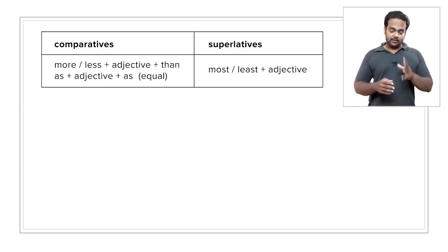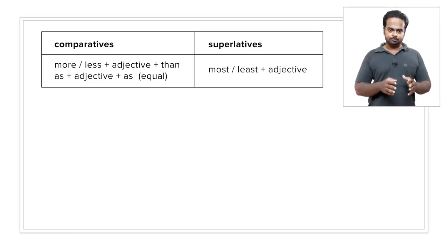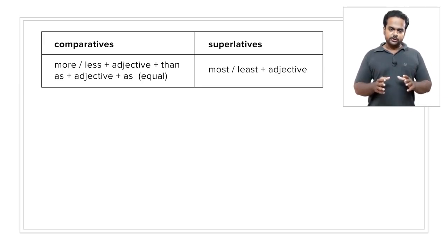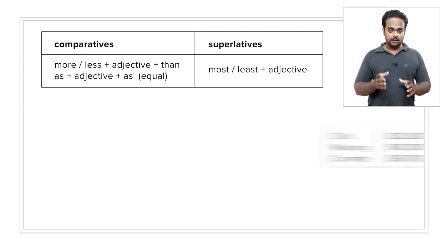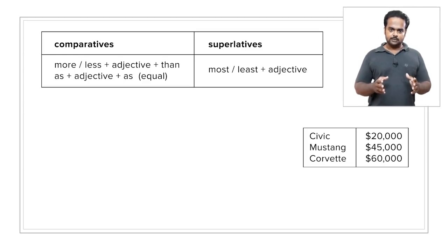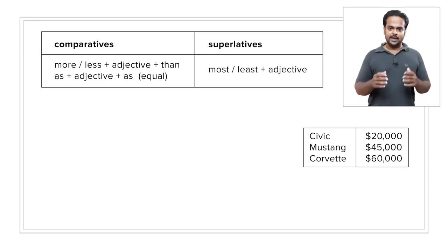Comparatives are found in this form: more or less plus an adjective plus than, or as plus adjective plus as — meaning that the two nouns we are comparing are equal. Superlatives appear as most or least plus adjective. To understand these, we're going to take the example of some popular cars: the Honda Civic, the Ford Mustang, and the Chevrolet Corvette. Let's say the Civic is $20,000, the Mustang is $45,000, and the Corvette is $60,000. Now let's compare these cars using the adjective 'expensive.'